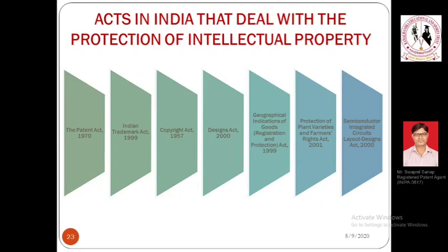For geographical indications, it is the Geographical Indications of Goods (Registration and Protection) Act, 1999. For plant variety protection — also called farmers' or breeders' rights — it is the Protection of Plant Varieties and Farmers' Rights Act, 2001. For IC layouts and designs, it is the Semiconductor Integrated Circuits Layout-Design Act, 2000. There are different acts for each type of IPR, indicating that each type is given special privilege by the law.